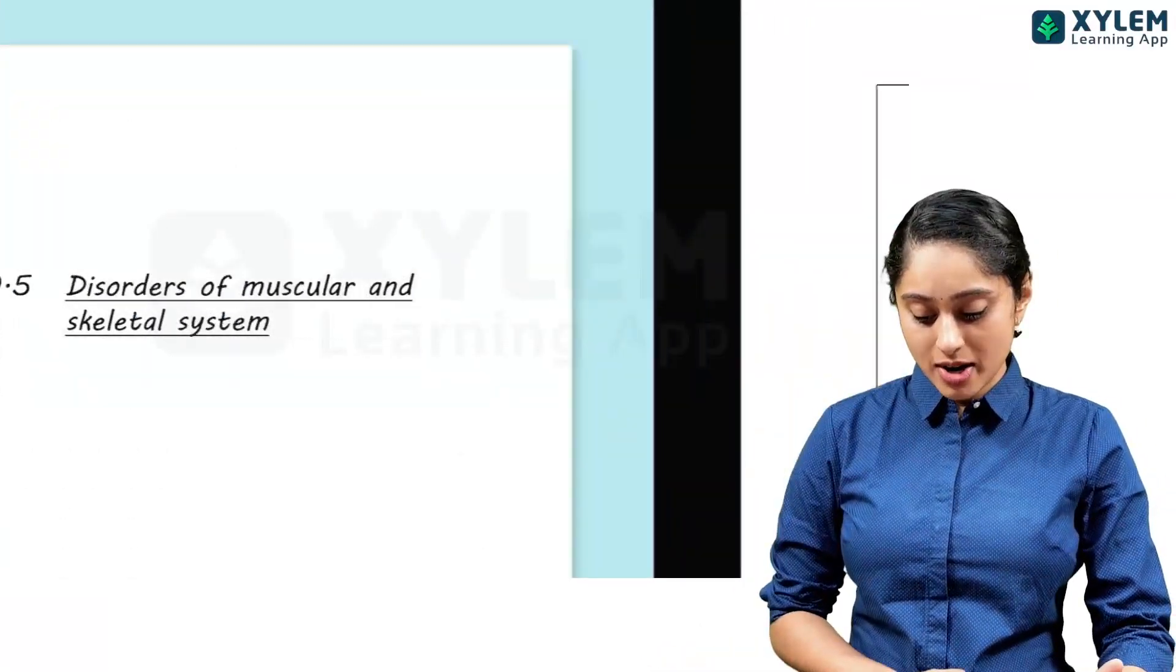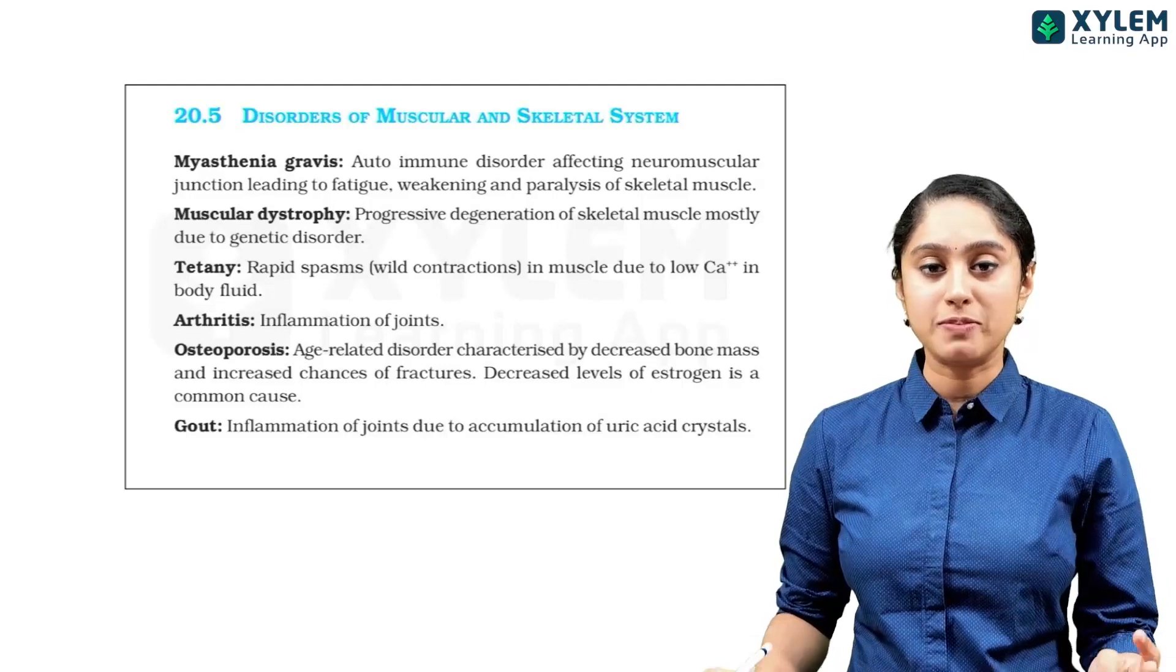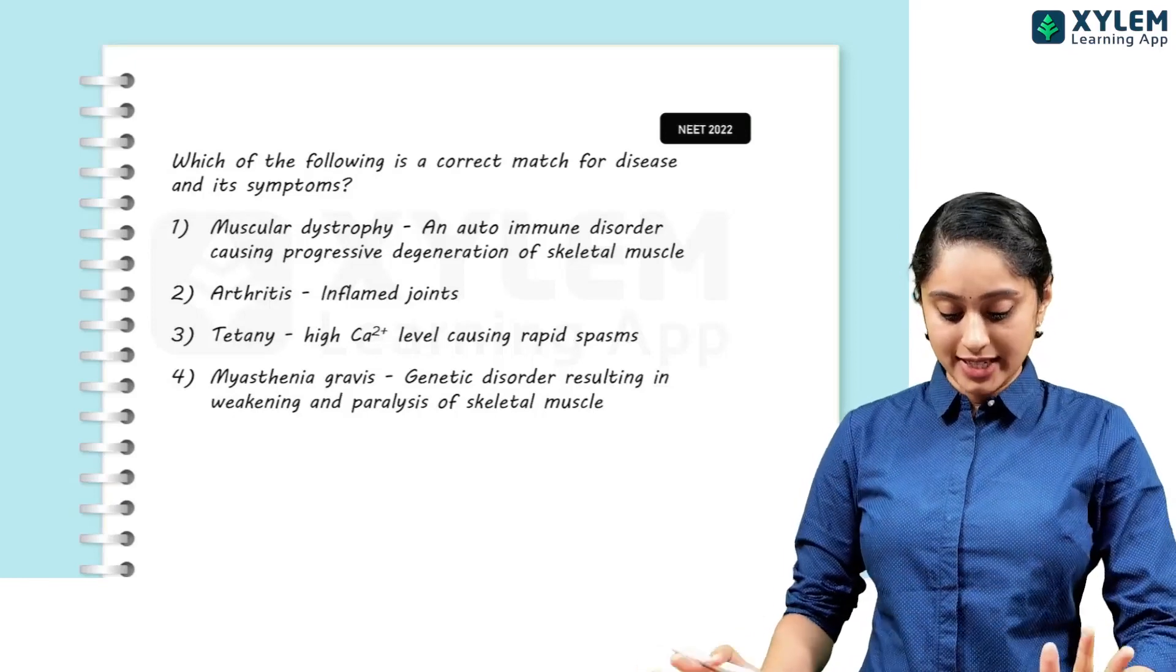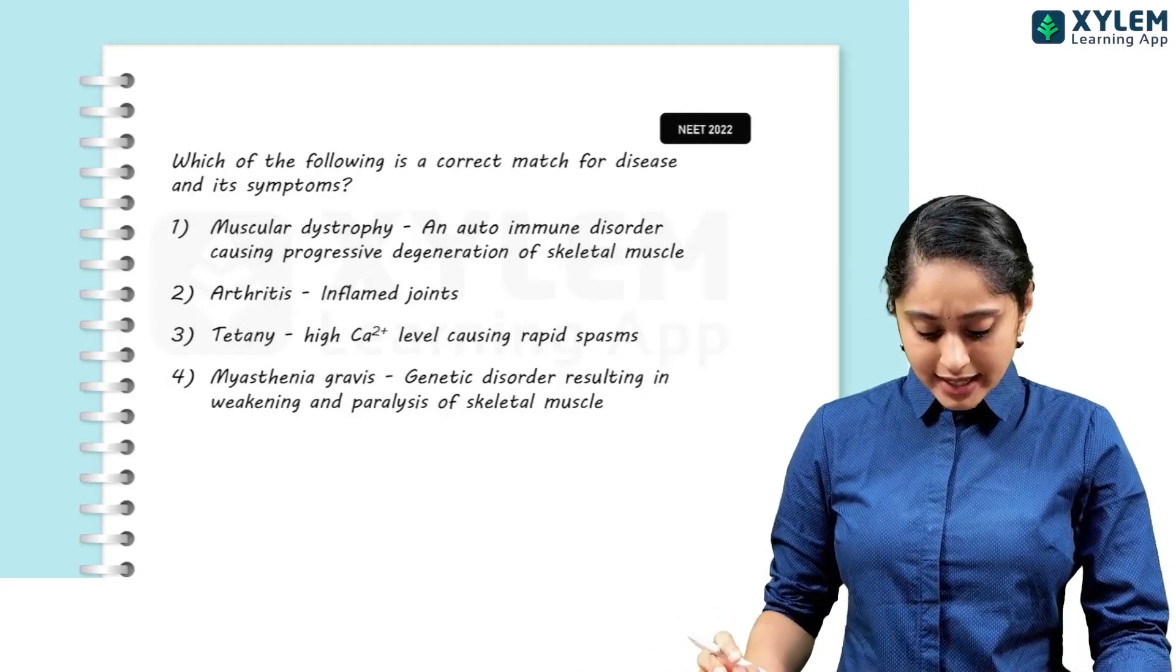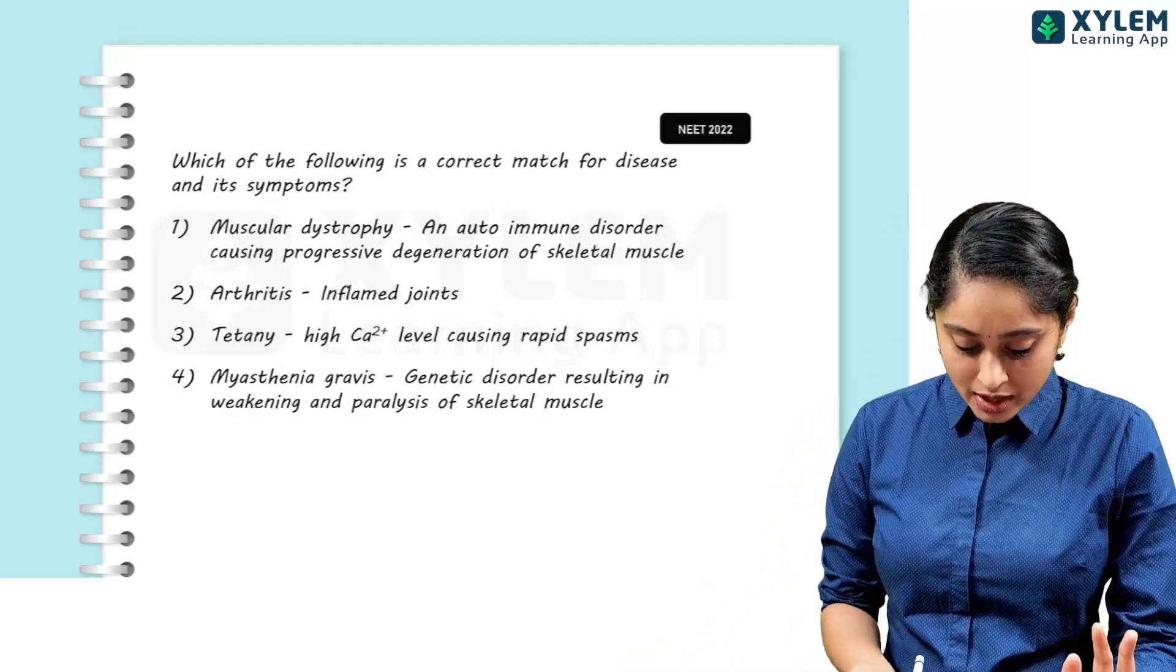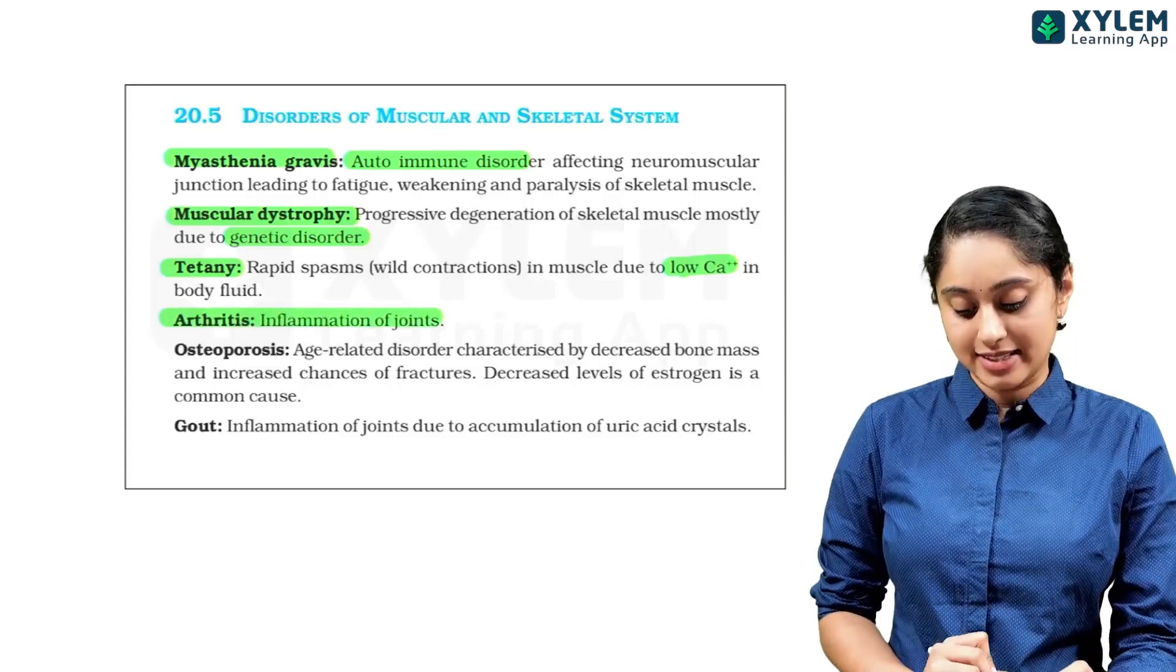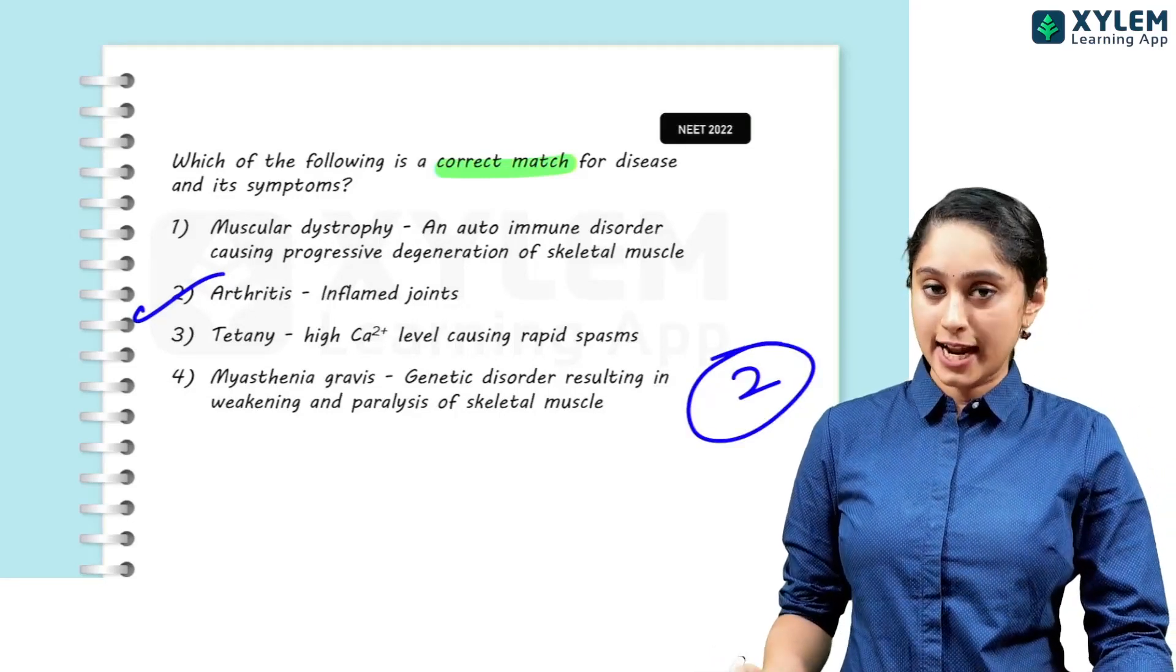Then coming to the disorders. In NCERT, in this part, there are 5-6 disorders given. So clearly look at this - the cause, the symptoms - based on this, match the following will come, and direct questions will come. So clearly look at this part. Which of the following is the correct match for the disease and the symptom? Muscular dystrophy - it is an autoimmune disorder. Arthritis - it is inflamed joints. Tetany - high calcium. And myasthenia gravis - it is a genetic disorder. But if you see, myasthenia gravis is the autoimmune disorder. Muscular dystrophy is the genetic disorder. Tetany is caused by low calcium. And arthritis is the inflammation of joints. So they have asked for the correct match. So my answer, 2, will be the right answer.